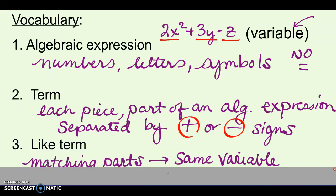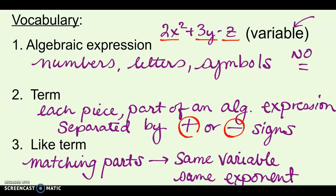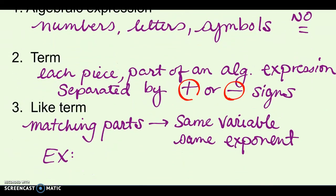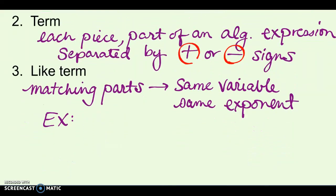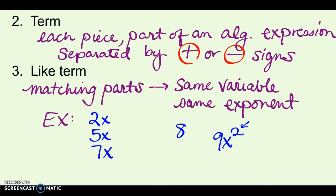Our last vocab on this page is like term — those are the matching parts, the terms that go together. They have to have the same variable and the same exponent. So like terms could be, for example, 2x and 5x and 7x — those are all like terms, they all have the same variable to the same power. The number 8 is not a like term with those because it doesn't have an x. And 9x squared is not a like term with my first set because it has an exponent of 2, and those don't. So it has to have the same variable, the same letter, and the same power or exponent.